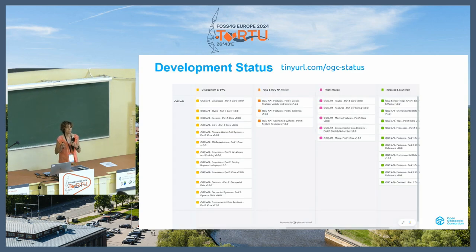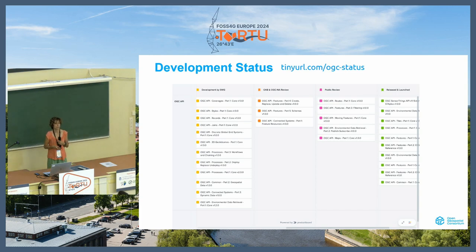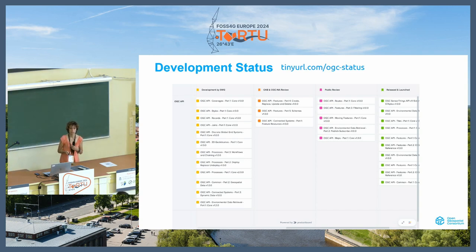There are different steps in the development of the standard. The last ones shown here include going to the architecture board, a review from the architecture board and naming authority — which are some bodies within OGC — and then there's the public review where everyone can give comments. Finally, they are released. You can check in these boards what is the status of each one of these parts.